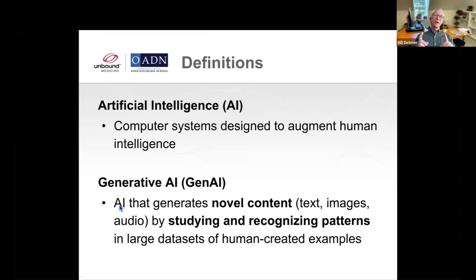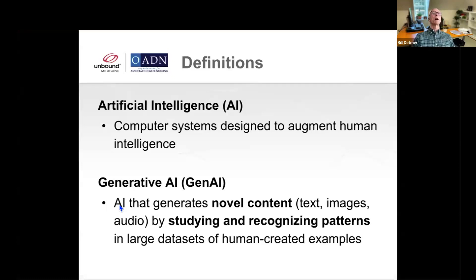Generative AI generates novel content — text, images, audio — by studying and recognizing patterns in large data sets of human-created examples. It's basically learning from the body of knowledge that is there, finding patterns, and then being able to create novel content for you.